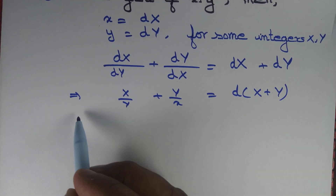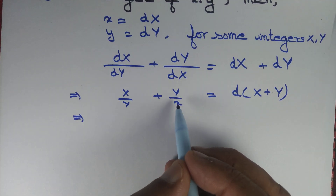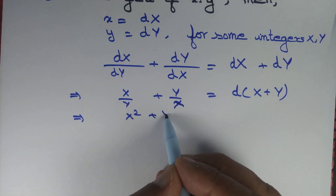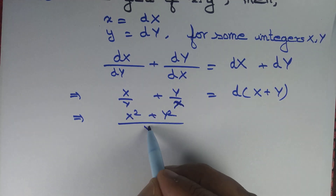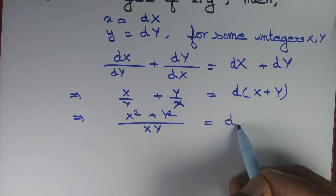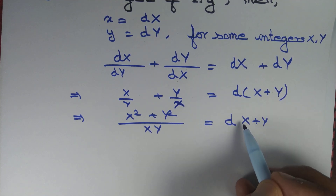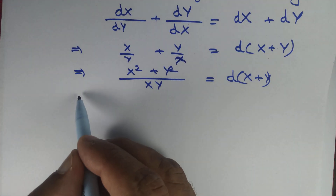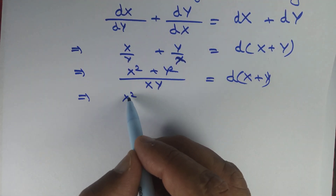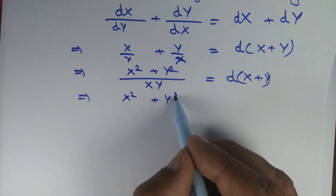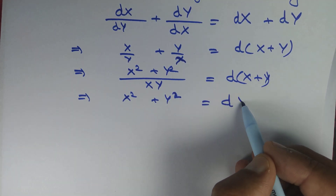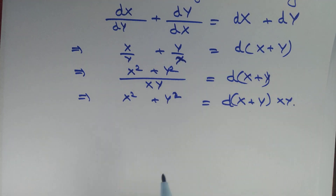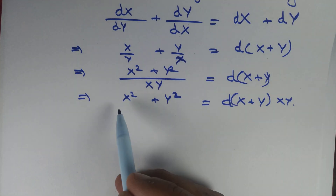We can further simplify this expression by taking the LCM, to obtain (X² + Y²) / (XY) = d(X + Y). We can further write this as X² + Y² = d(X + Y) · XY.